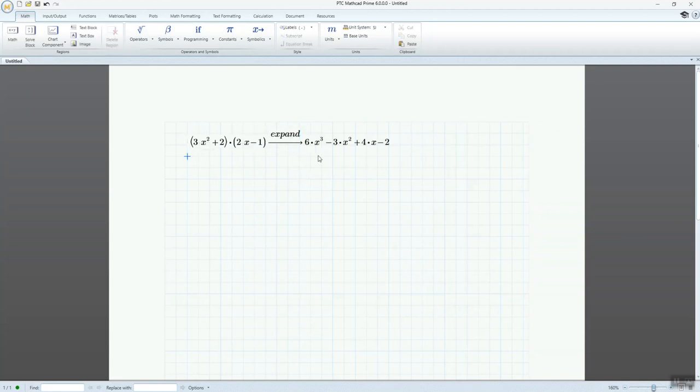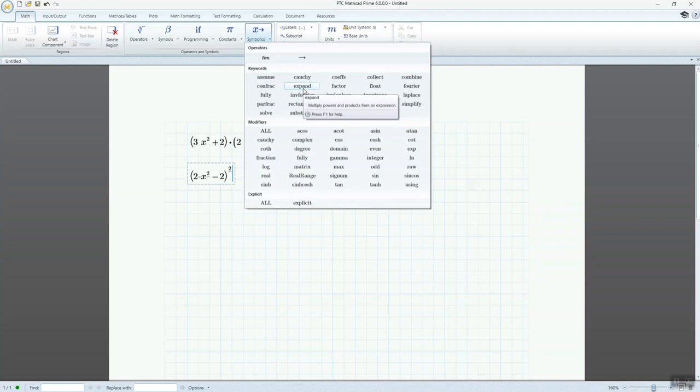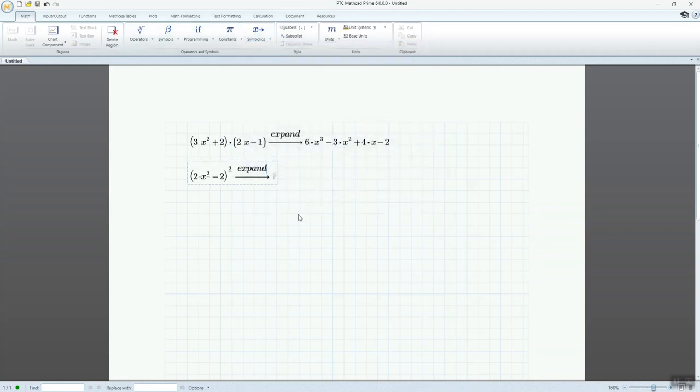And then we get this result. For another example I have 2x squared minus 2, and I go to symbolic, I choose expand, and then I press enter. I get this result.